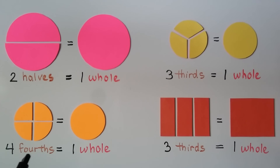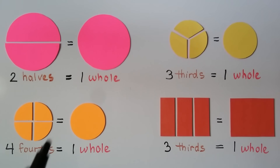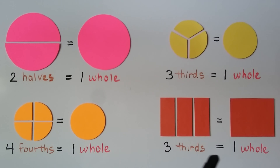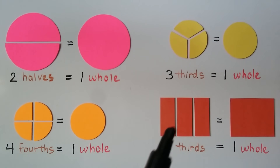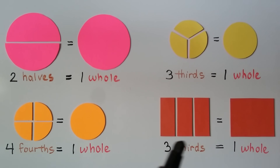This orange circle was cut into four equal parts. Each part is one fourth. We have four fourths, and the four fourths all together are equal to one whole orange circle. Here we have a red rectangle, and it's cut into three equal parts. The three equal parts all together are equal to one whole red rectangle. Each part is one third. We have one third, one third, one third — three thirds.